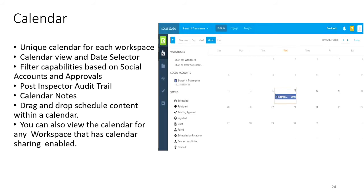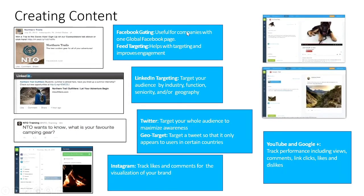Facebook provides two targeting options: Facebook Gating and Feed Targeting. Facebook Gating is a great option if you have one global Facebook page for your company. When you create a specific post, it will appear in the news feed and on the timeline to users following you. Gating makes the post visible only to users within specific countries.